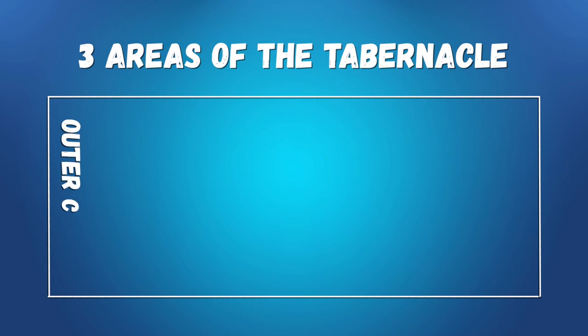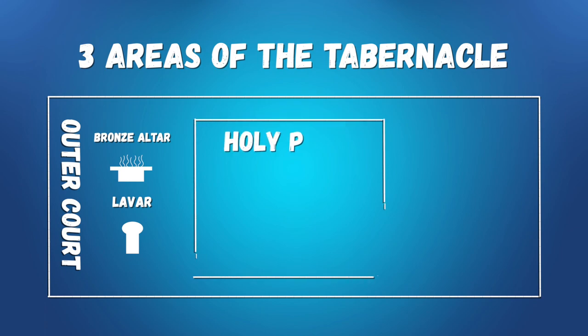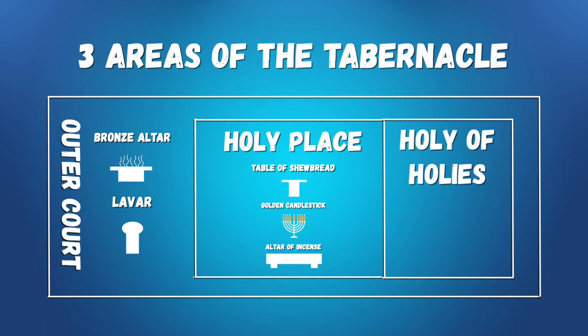Let's go over the elements of the tabernacle together one more time. Inside the tabernacle, the first area was called the outer court. Then there was the second area, called the holy place. There God instructed them to place the table of showbread, golden candlestick, and an altar of incense. The third and final place was called the holy of holies, where God instructed them to put the ark of the covenant.